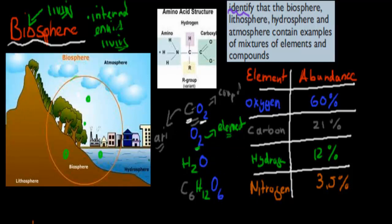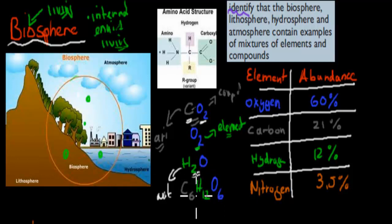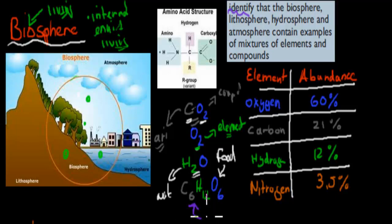H2O is obviously water itself, and water we can find in the biosphere — inside our bodies. The vast majority of our bodies are made up of water, but we can also find it in the air itself as rain or vaporized water particles. And glucose is also an example of a compound. Why? Because it has carbons, hydrogens, and oxygens — three different types of atoms — which makes it a compound.